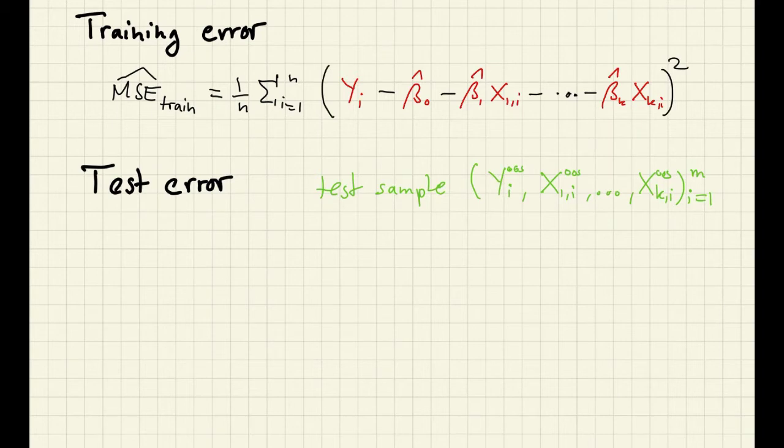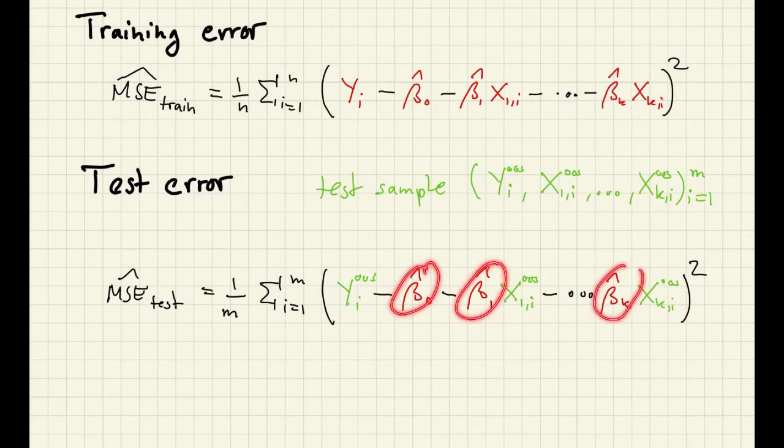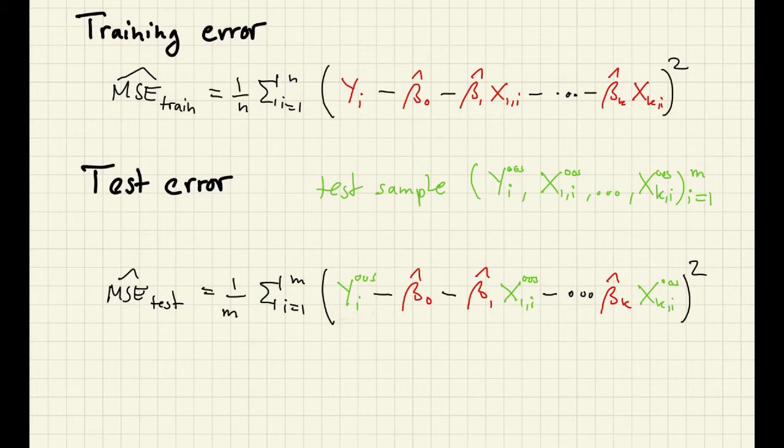And here, now the test error is given by - and now we have to remember, we're taking a sample average over the M observations in the test sample, and now we are taking the coefficients that we estimated in the training model and we are applying them to compute predictions on the test sample. Here we take observed features in the test sample, apply the prediction rule that we've estimated in the training sample, and then compute a predicted value and compare this predicted value to the observed outcome. That is the test error.